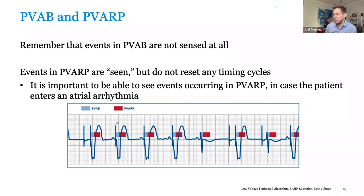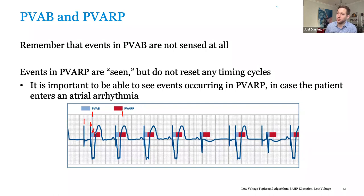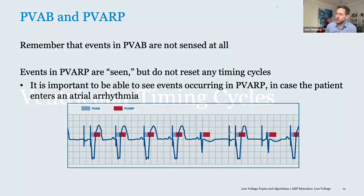Here's a good visualization of PVAB and PVARP — they both start at the exact same time. However, your PVAB obviously won't extend as long as your PVARP. So you have your atrial paced event, your ventricular pace which starts the PVAB timer and the PVARP timer. This effectively blanks out any ventricular signal on the atrium with PVAB, and obscures any possibility of retrograde or inappropriate tracking. Same thing here — if you have an intrinsic ventricular event, when first sensed it starts your PVAB and PVARP timers as well.